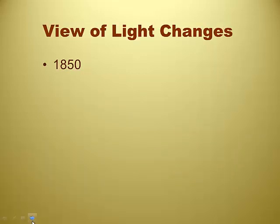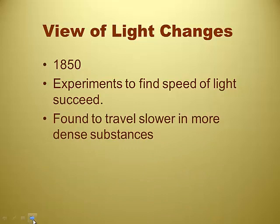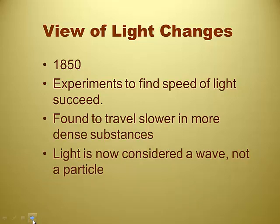So in 1850, the idea of light changes. That's a long time after Newton. Like I said, about 250 years after Newton and Huygens. The first experiments were done. They found the speed of light. They did find that light travels slower when you put it in more dense substances. And so now light is considered a wave, not a particle. So pure energy. So they kind of went back and forth, back and forth. And this is what we mean about the wave-particle duality, or the dual nature of light, is that you get this idea that light can be a wave or light can be a particle, depending on what experiment you're doing at the time.